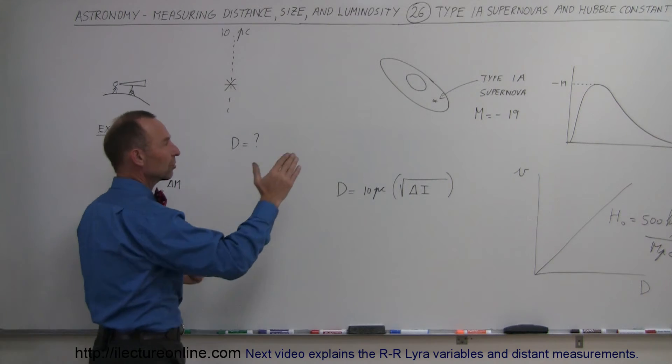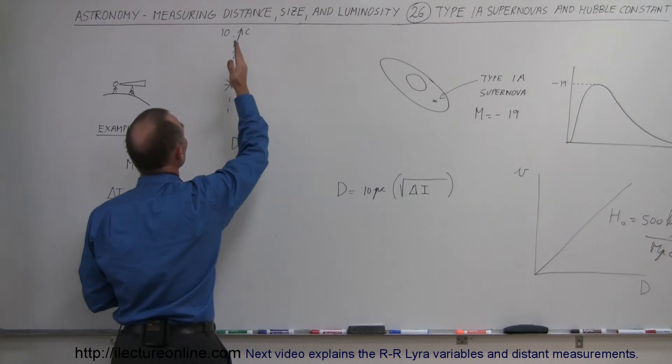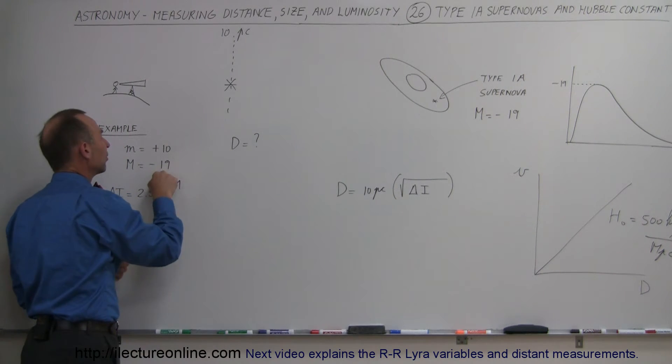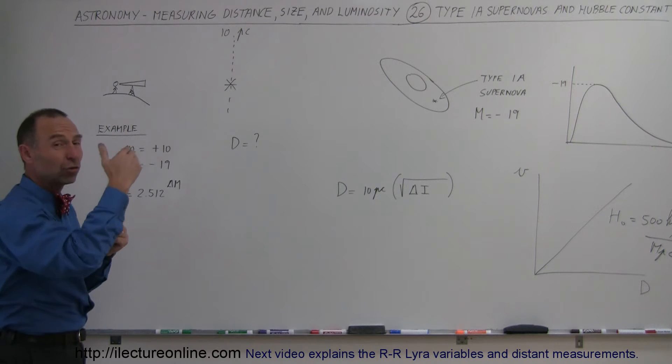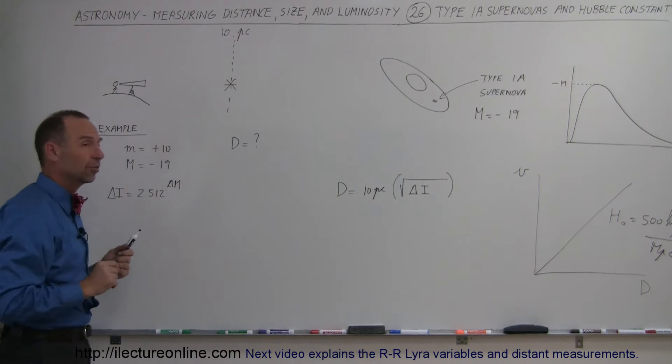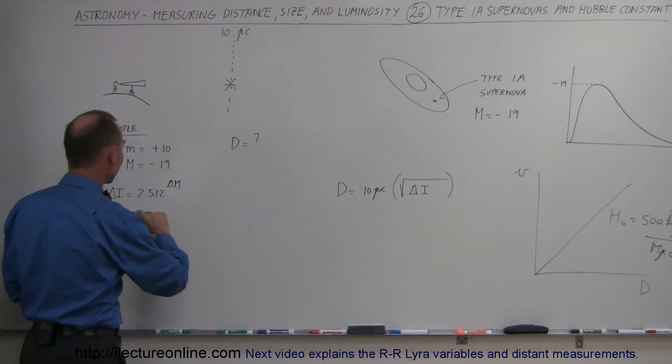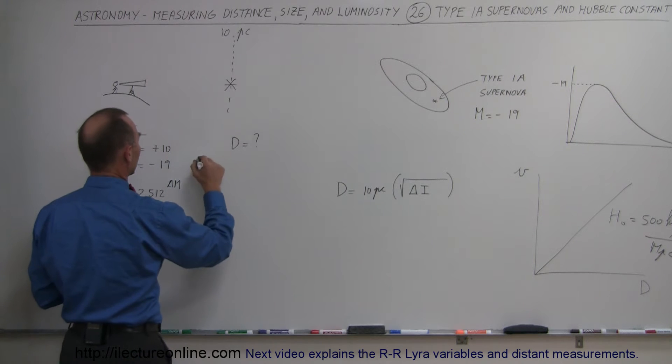What that means is that if the actual explosion happened at a distance of 10 parsec, it would have a brightness of minus 19. But instead, when we measure it, since it's so far away, it only had a brightness of plus 10. That's a difference of delta M. So, the delta M here would be about 29.